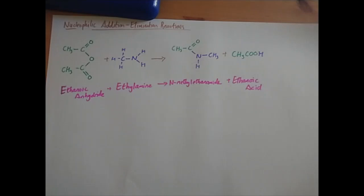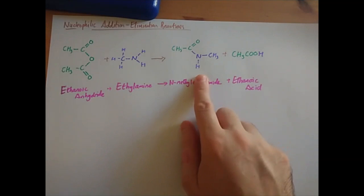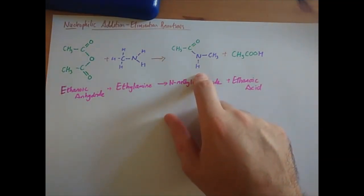Rather than using ammonia this time, we're going to use ethylamine and we're going to produce a secondary amide. Now the reason we produce a secondary amide but produced a primary amide in the first one is nothing to do with what we start off with.